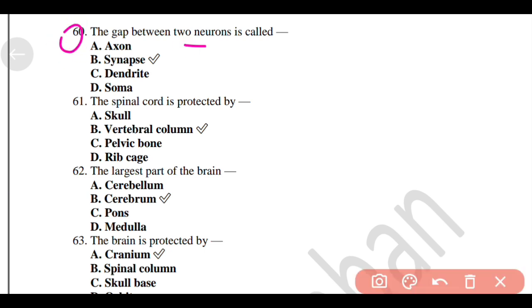The gap between two neurons is called synapse. The spinal cord is protected by vertebral column. The largest part of the brain, Option B, Cerebrum.